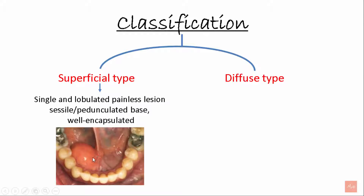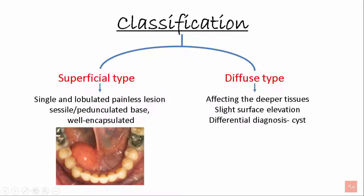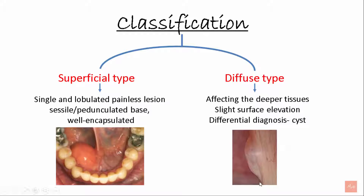This is the superficial type. The diffuse type affects the deeper tissues. It has slight surface elevation and the differential diagnosis for this can be cyst. This is the diffuse type of lipoma.